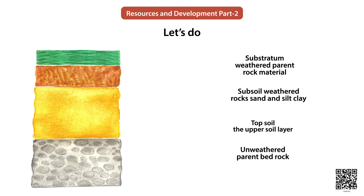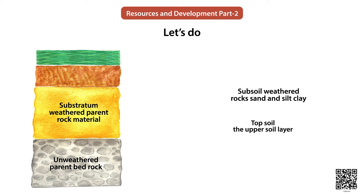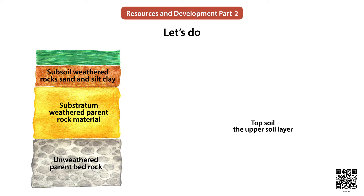Now let's do an exercise. You can see the names of different layers of a soil profile. We will place the name of each layer at the right place in the diagram. First: unweathered parent bedrock. After that is substratum consisting of weathered parent rock material. The third layer is subsoil consisting of weathered rocks, sand, silt and clay. And after that is the topsoil.